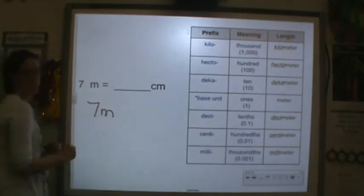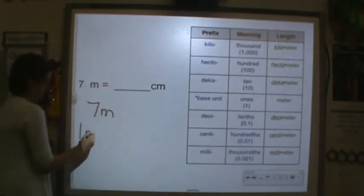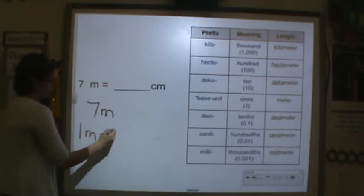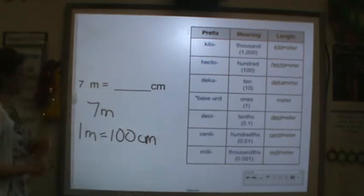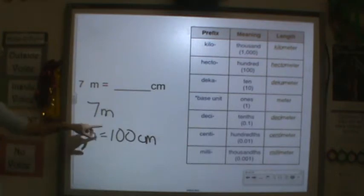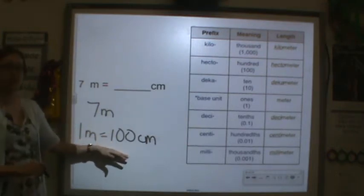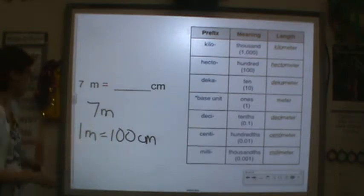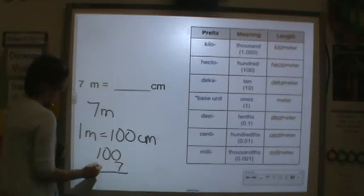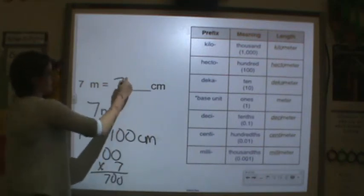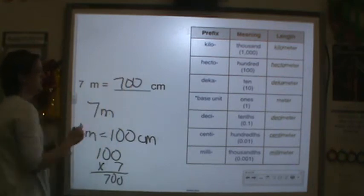Now 7 meters: one meter equals 100 centimeters, so meters are bigger than centimeters. You'll have more centimeters because they're smaller. Multiply 100 times 7 to get 700 centimeters. Centi is smaller, so you're going to have more small units.